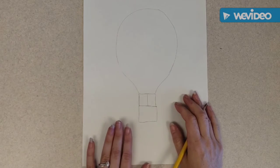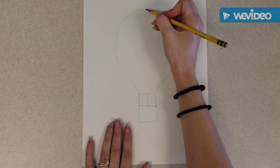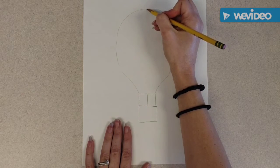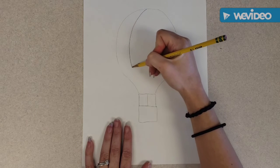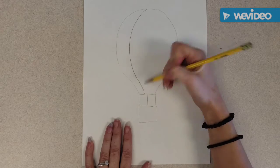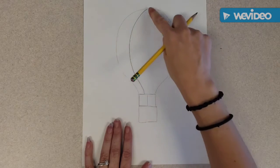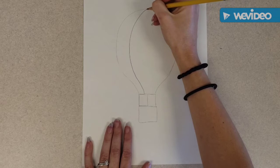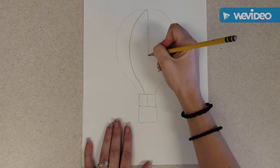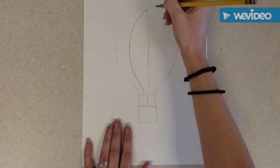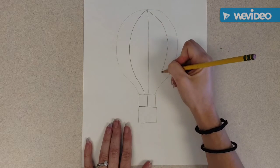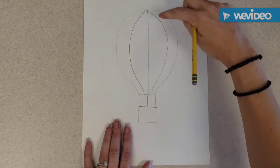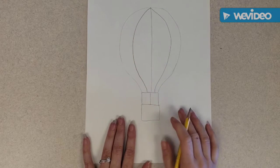Now the hot air balloon itself looks a little plain. So we're going to start at the top and we're going to divide our hot air balloon into sections. I like to curve my lines and follow the shape of my hot air balloon to make it look a little more 3D, a little more realistic. So I just follow that curve and now I have a hot air balloon.